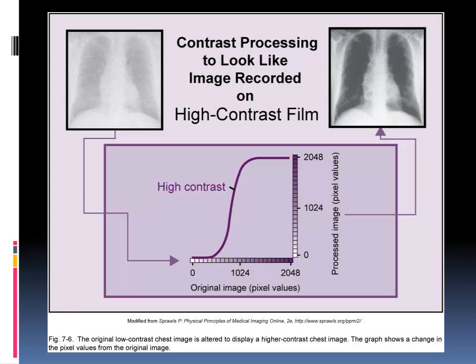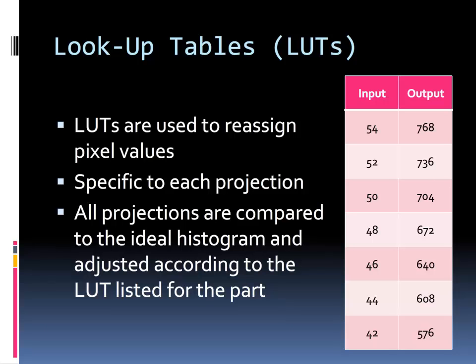Remember when I said the exposure response in digital images is linear? Lookup tables reassign pixel values to replicate the exposure response we saw in film screen systems using high contrast film. This narrows the latitude or dynamic range. This graph is similar to that of the characteristic curve for radiographic film, known as the HND curve. Each projection of each part has a specific LUT that is applied to optimize the contrast and brightness of that digital image to demonstrate the anatomy of interest.